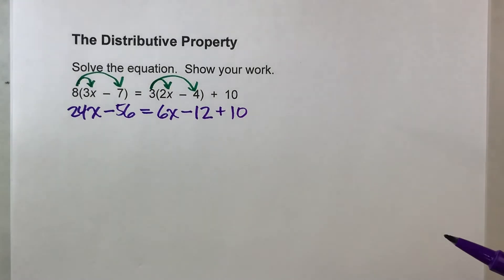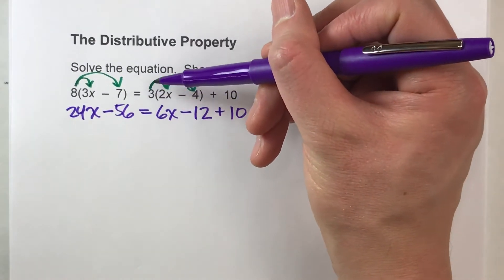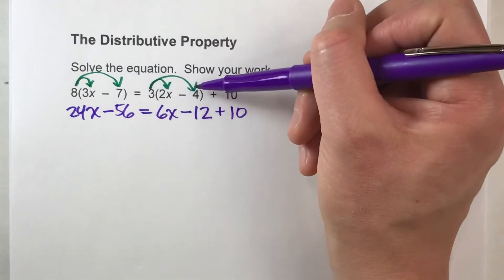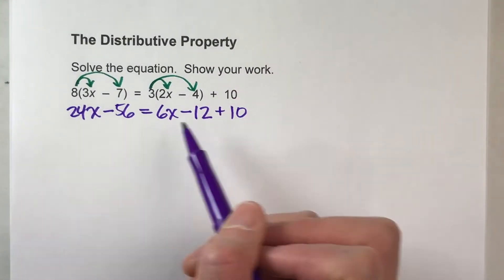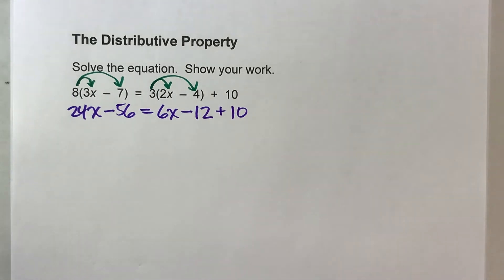So that's what the distributive property does. It multiplies that number on the outside of the parentheses times everything on the inside of the parentheses. And when you do that, notice, there are no parentheses anymore. They're all gone. And now we can actually start solving this equation.